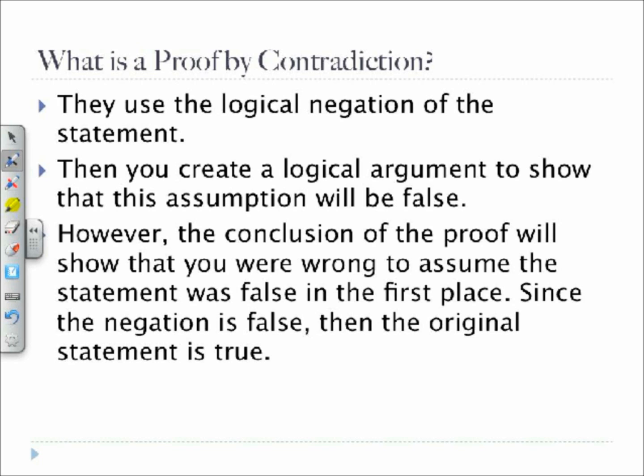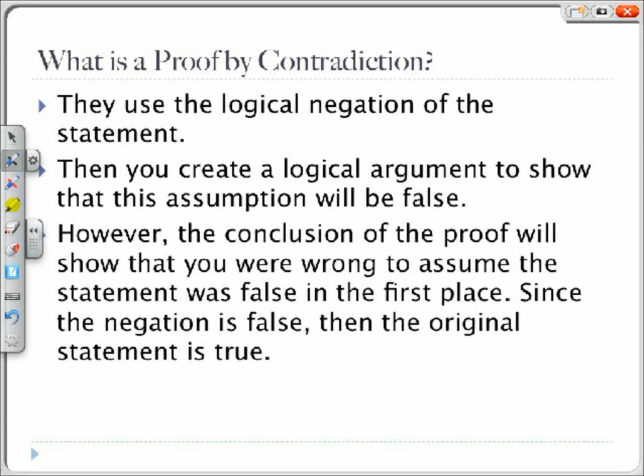So, if you wanted to set up a proof of contradiction for a proposition, you would do the following. If you have the statement, if P then Q, simply the negation to this is P and not Q. Then you would create assumptions that would lead to the conclusion of the contradiction. Proof by contradiction should not be confused with proof by contrapositive. Proof by contrapositive negates both the conclusion as well as the hypothesis and proves it directly.